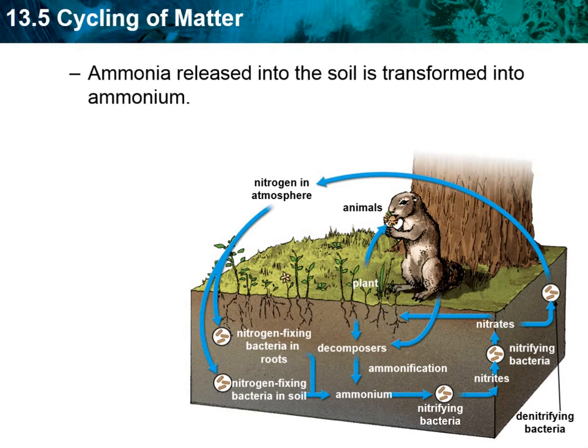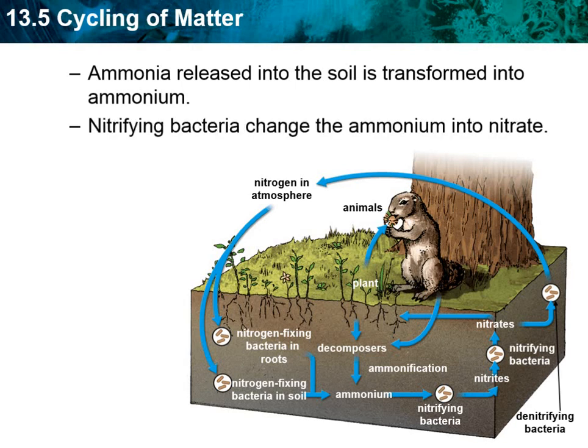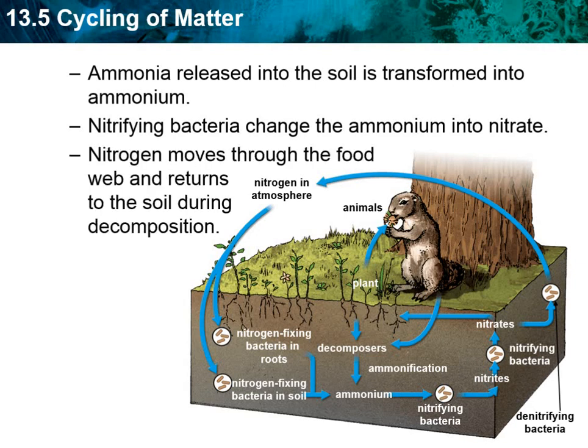We'll be playing a game in class about the nitrogen cycle. Ammonia is released into the soil and transformed into ammonium. Then nitrifying bacteria change the ammonium to nitrates. The nitrogen moves through the food web and returns to the soil during decomposition.